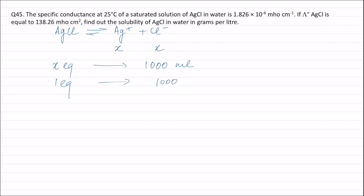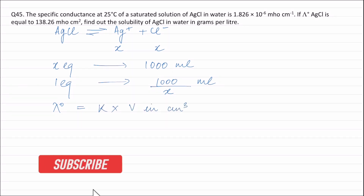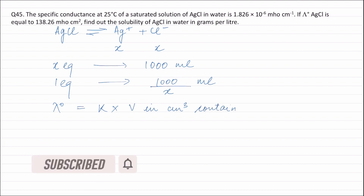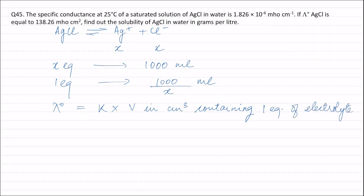Equivalent conductance equals specific conductance multiplied by the volume in cm³ containing one equivalent of electrolyte. The equivalent conductance is 138.26, the specific conductance is 1.826 × 10⁻⁶, and the volume is 1000/x mL, where x is the solubility in moles per liter. Solving this gives x = 1.32 × 10⁻⁵ moles per liter.